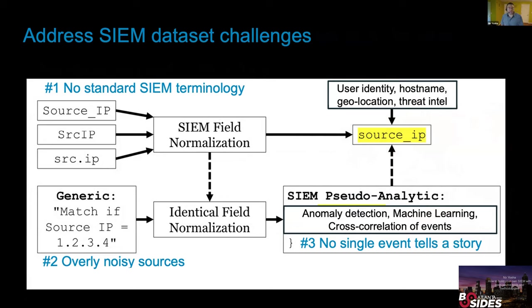How do SIEM vendors solve the issue? The terminology issue needs to be solved by normalization — most vendors take different types of entities and normalize them into a common schema. For noise, there's a continuous need to update rules, which takes a lot of resources from either the vendor or the security operations team. To understand the story, there should be some enrichment of the data, and obviously machine learning. All of those things are available today in open source tools.